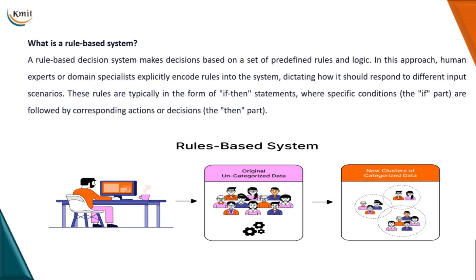When I talk about rule-based systems, these basically make decisions based on a set of predefined rules and logic. In this approach, a human expert who is specialized in a particular domain should explicitly encode rules in the system, dictating how a computer should respond to different input scenarios. These rule-based systems are one type of artificial intelligence systems that use a set of predefined rules and logic for making decisions or solving problems.